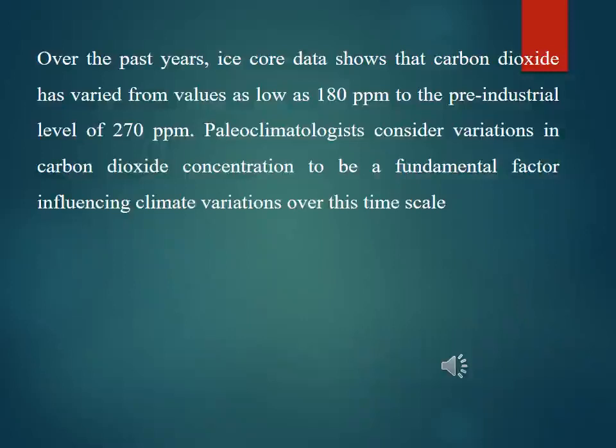Over past geological time, ice core data shows that carbon dioxide has varied from values as low as 180 ppm to the pre-industrial level of 270 ppm. Paleoclimatologists consider variation in carbon dioxide concentration to be a fundamental factor influencing climate variation over this time scale.